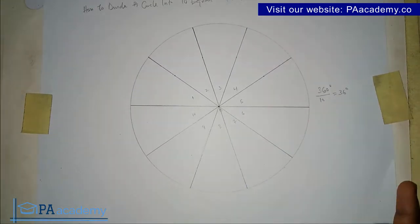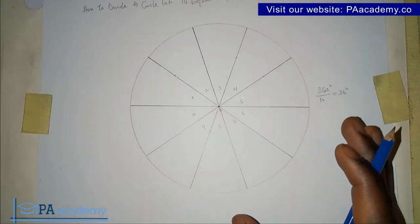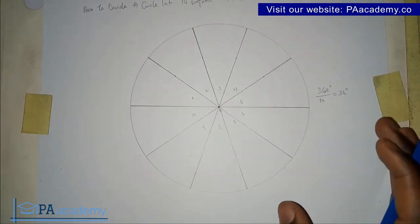Like I said at the beginning, irrespective of the size of your circle, how big or how small it is, the same steps apply and you'll be able to divide the circle into 10 equal parts.